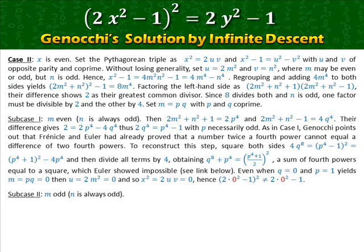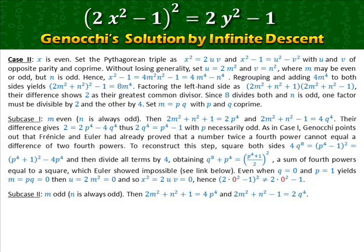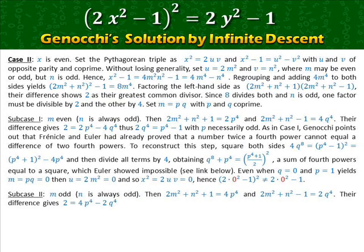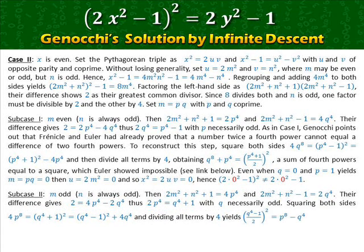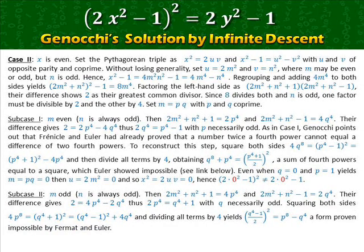Sub-case two: m is odd. Then the first factor equals 4p⁴ and the second factor equals 2q⁴. Working with the difference ends up giving 2p⁴ = q⁴ + 1, with q necessarily odd. Squaring both sides and dividing all terms by four yields a square equal to the difference of two fourth powers — a form proven impossible by Fermat and Euler.